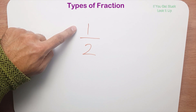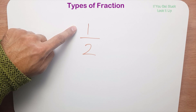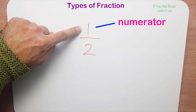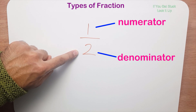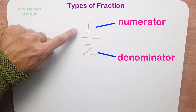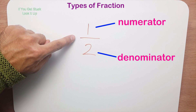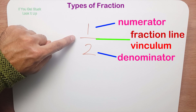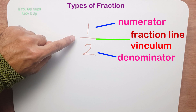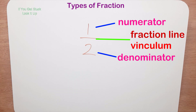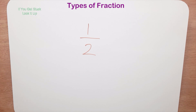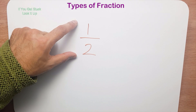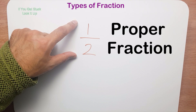This is a fraction that everybody knows as one half. The top part is called the numerator, the bottom part is called the denominator. It's important to know these two words. This here is the fraction line, or fraction bar, or vinculum. The main thing is you learn numerator and denominator.